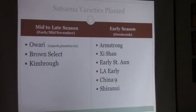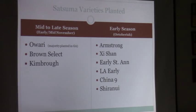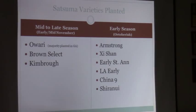Most of the varieties planted are Owari — that's the majority, the most available when people wanted to get into the Satsuma business — along with Brown Select and Kimbrough. These are mid-to-late season, basically November ripening. Some people also have other varieties: Armstrong, Zishan, Early St. Anne, LA Early, China Nine, and Shiranui — some of the earlier varieties. A lot of it isn't well known exactly when they mature, and early maturing varieties may be mature but still somewhat green, which is a factor for marketing.